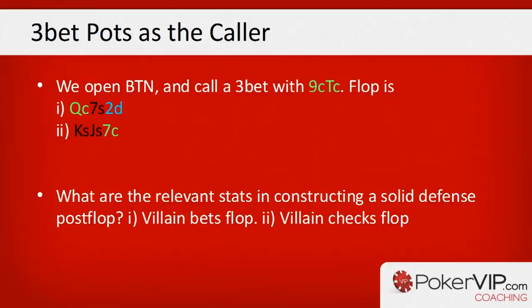If our opponent has a lower turn barrel frequency, this may indicate less fold equity, but we can also check the stat 'fold turn versus raise.' If our opponent folds very frequently to turn raises, raising the turn may have a higher expectation than calling. We also want to think ahead: for example, if our opponent has a very high river barrel frequency, that's not necessarily good for us. But if he has a low river barrel frequency and a high check-fold when he skips his river c-bet, then this adds to the expectation of floating — because if he checks the river we have a very profitable bluff opportunity.